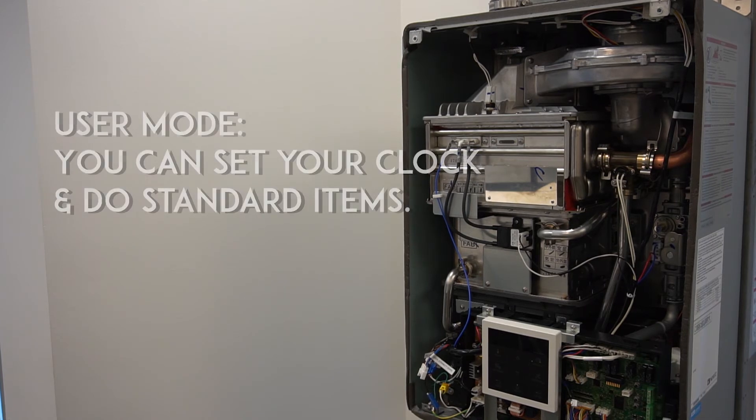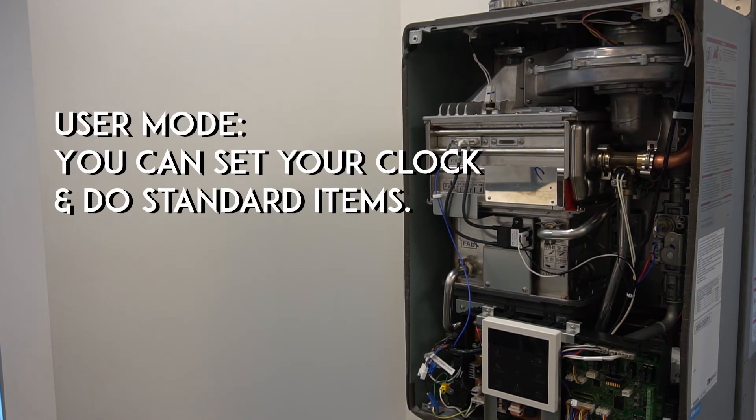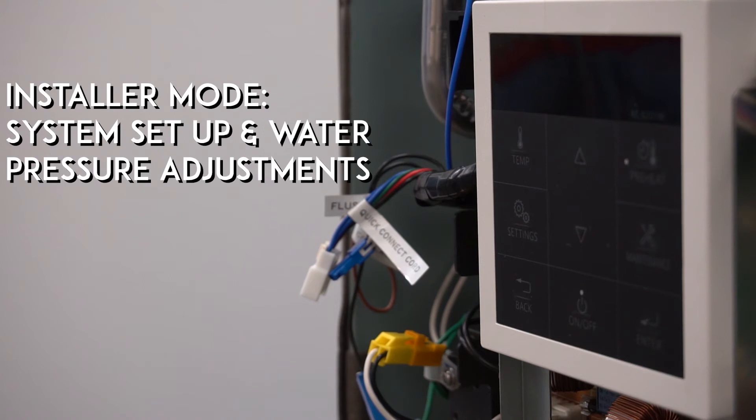In the user mode you can set your clock and do standard items. In your installer mode this is where you can set up what type of system and change your water pressure.